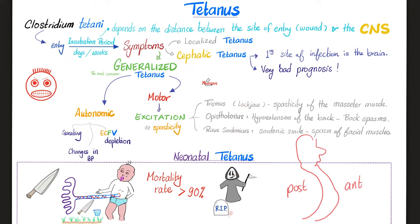Autonomic symptoms include excessive sweating, which causes too much loss of fluids, leading to extracellular fluid volume depletion — a more accurate term than dehydration, because dehydration just means loss of water, whereas losing water and salt is volume depletion. Autonomic dysfunction also leads to fluctuations in blood pressure, going up and down for no reason.